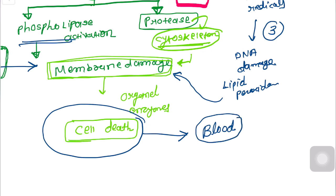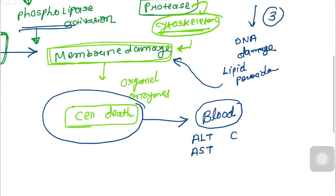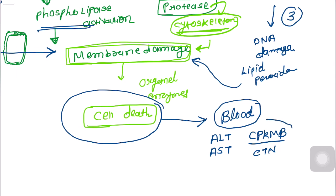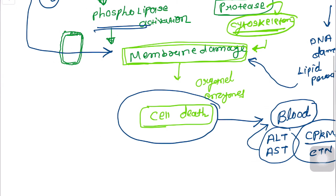When cellular death occurs, multiple types of enzymes are released into the blood depending on the site of cellular damage. For example, when liver cells are damaged, ALT and AST are released into the blood. When heart cells are damaged, CK-MB and cardiac troponin are released into the blood.